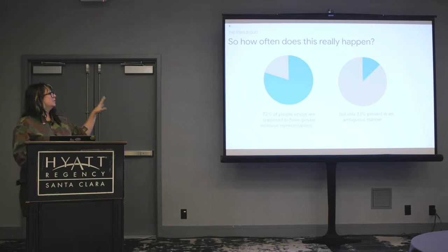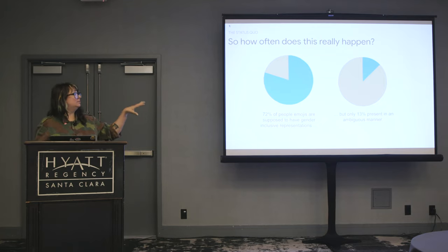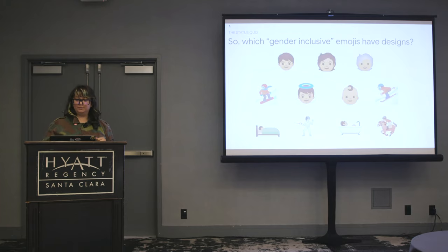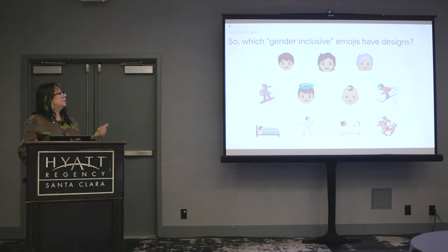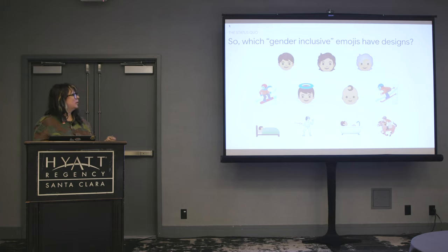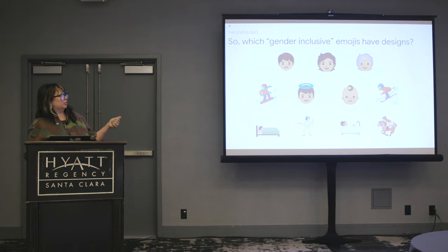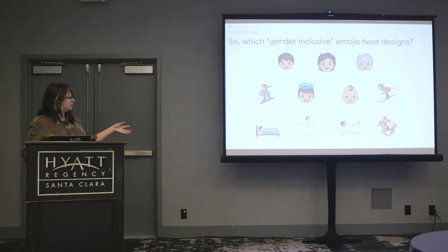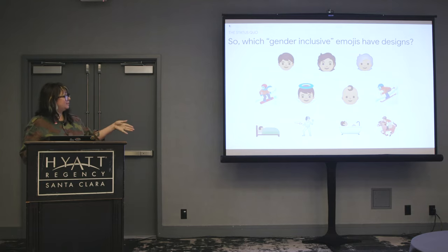We're going to talk about the 13% that do present in an ambiguous manner. We have: child, adult, older person, snowboarder, baby angel, baby, skier, person in bed, fencer, person in bath, and horse racer. Let's zoom out and look across all the different vendors. Eight of these 11 emojis are unique in that they exist without any male or female counterparts — we don't have woman in bed or man in bed, baby girl or baby boy. These emojis exist purely in a neutral space.